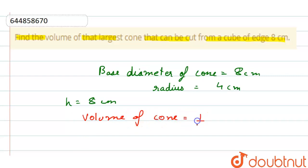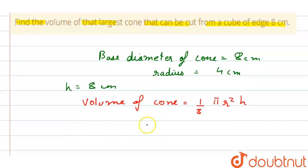That is 1 by 3 π r² h, right? So we can simply put the values. We have 1 by 3 into π, that is 22 by 7, radius is 4, so 4 into 4, and height we have as 8.